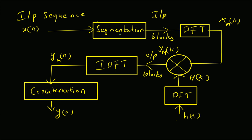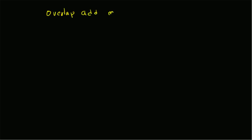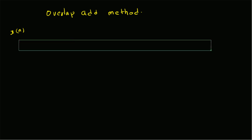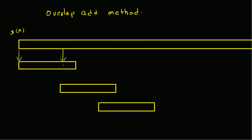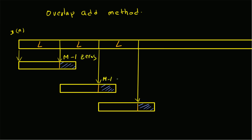We are going to look at the overlap-add method. The main idea is: given the input x(n), we have to divide it into blocks of uniform length. We want to take only L values for any segment; however, the actual blocks will have N values. The segmentation is done as follows: we take the first L values and put them in x1(n), and then we append M minus one zeros, so the length is N equal to L plus M minus one.